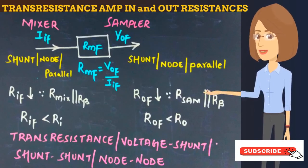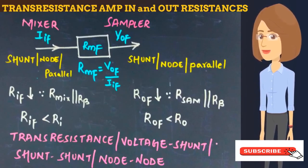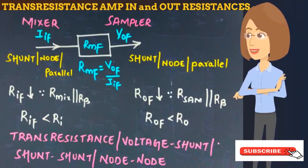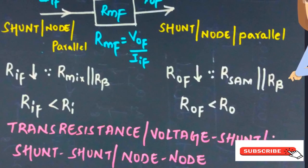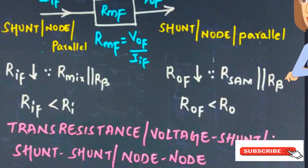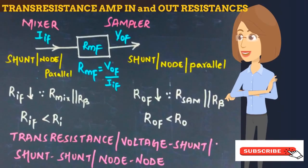The transresistance amplifier, also called the voltage-shunt or shunt-shunt amplifier, has voltage as its output signal and current as its input signal. We use a parallel connection between the sampler and feedback network at the output, and also a parallel connection between the mixer and feedback network at the input. Since we are doing parallel connections both at the output and input, both the input and output resistances decrease.